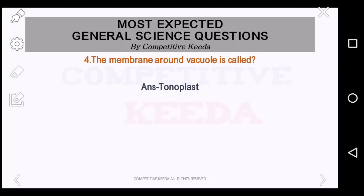Now the membrane around a vacuole is called what? Let us first know what a vacuole is and what its function is. It is a membrane-bound organelle and its main function is to separate the waste products of the cell and isolate them from the rest of the organelles. It is also helpful in removing unwanted toxic material. The answer here is tonoplast — it is the membrane around the vacuole.